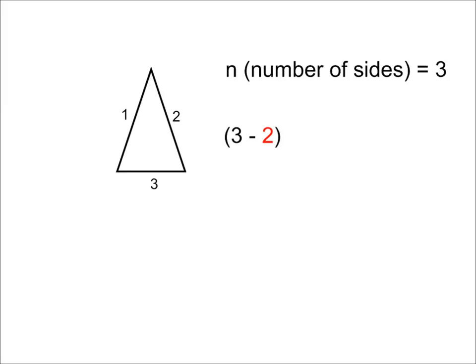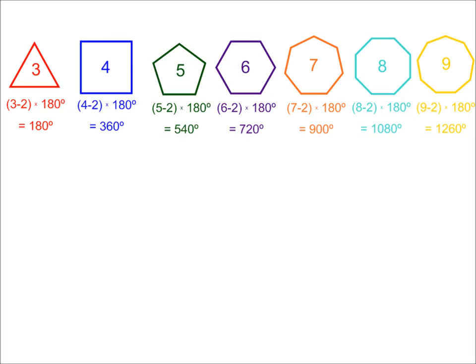I take away 2, and this is crazy, I multiply by 180. And all the polygons will work the same z, so just subtract 2, n times 180.